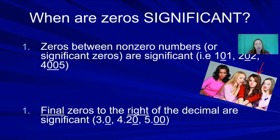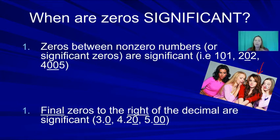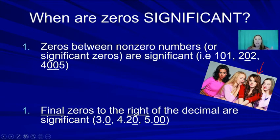Another type of significant zero: trailing zeros to the right of a decimal point after a significant digit are significant. For example: 3.0 has 2 sig figs; 4.20 has 3 sig figs; 5.00 has 3 sig figs. These zeros are significant because the person recording that measurement declared they matter.